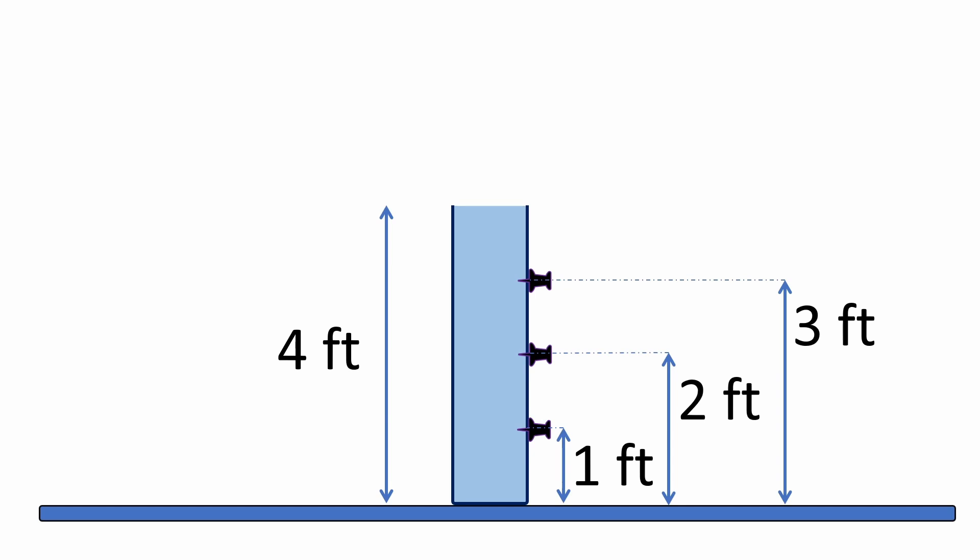When the holes are opened, water will obviously be ejected from each hole. We call that a water jet. The question is, if we open all three holes at the same time, where will the three water jets land?